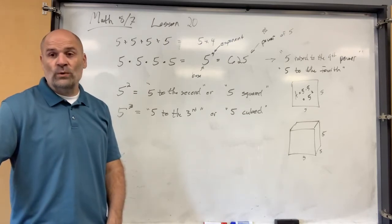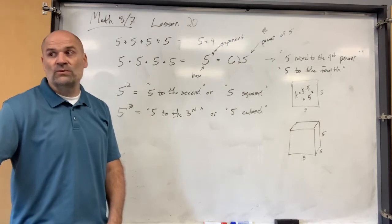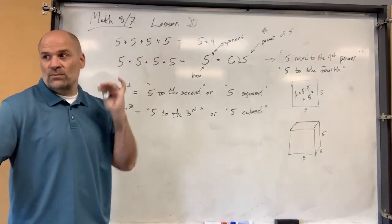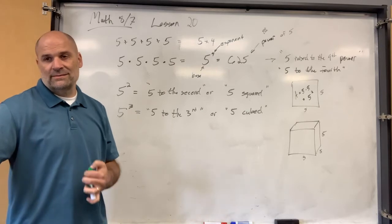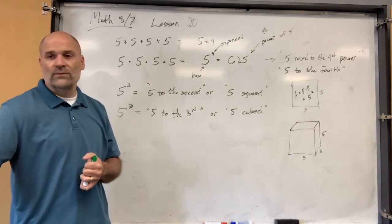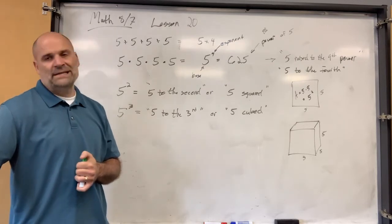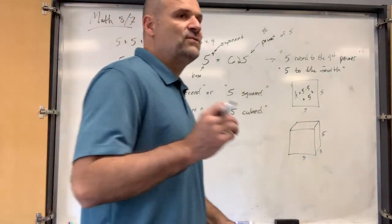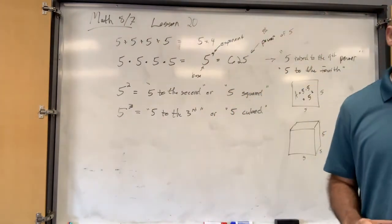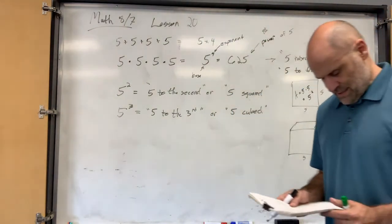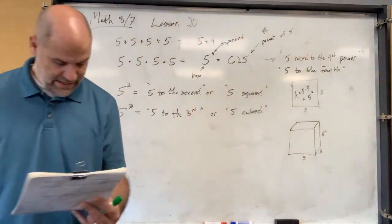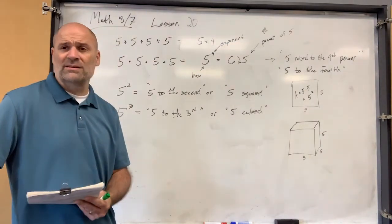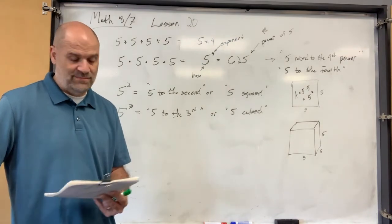Have you ever heard the term 'exponential growth' or 'it grew exponentially'? That means really big, really fast. If it decreases exponentially, then you lose really big, really fast. So the area of a square is base times height, but base and height are the same thing.